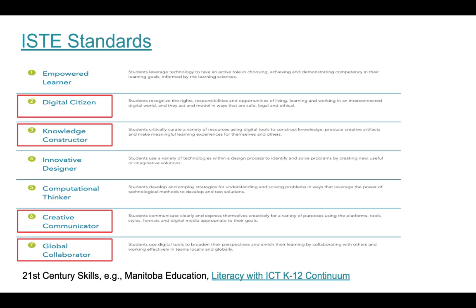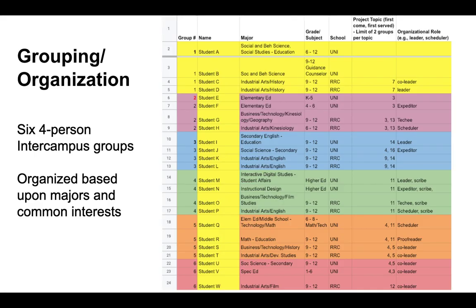And finally, global collaborator — where students use digital tools to work in teams that are both global and local. We began by creating groups: six four-person inter-campus groups. This would mean that the students would actually have to work with each other from a distance to create their final project.